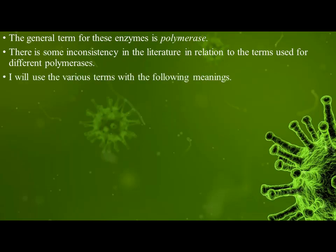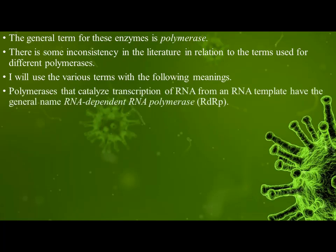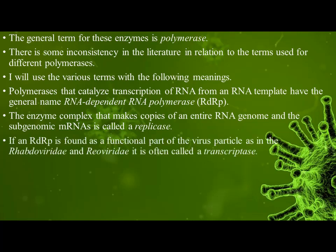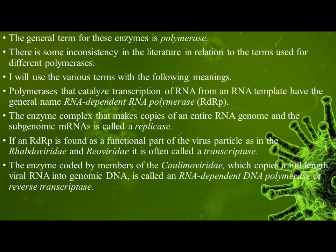Polymerases that catalyze transcription of RNA from an RNA template have the general name RNA-dependent RNA polymerase (RDRP). The enzyme complex that makes copies of an entire RNA genome or subgenomic mRNA is called a replicase. If an RDRP is found as a functional part of the virus particle, as in the Reoviridae and Reoviridae families, it is often called a transcriptase. The enzyme coded by members of the Caulimoviridae, which copies a full-length viral RNA into genomic DNA, is called an RNA-dependent DNA polymerase, or reverse transcriptase.